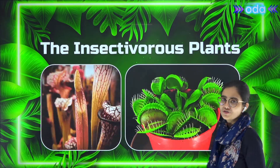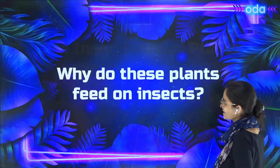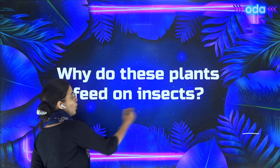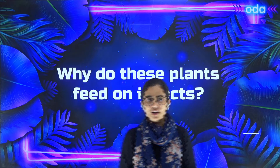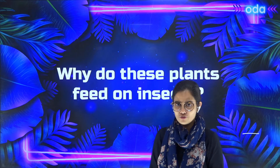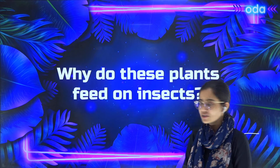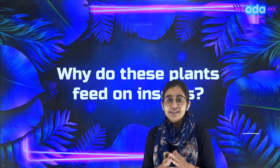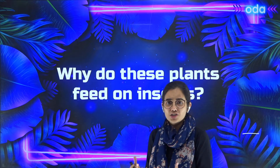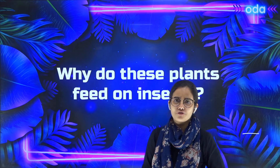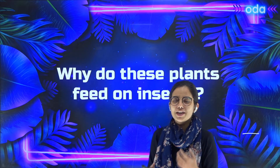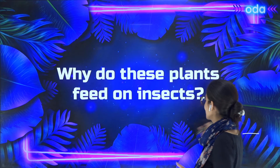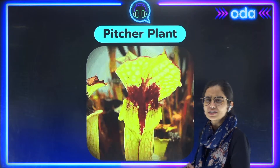Let's have a look at the examples — being the pitcher plant and the Venus flytrap. But the question is, why do these plants feed on insects? Because we know that plants make their own food by the process of photosynthesis. Then why at all is there a group of plants feeding on insects? Well, the answer is very simple: these insectivorous plants grow on soil which does not have the right amount of nutrients. So to fulfill all their nutrient requirements, they have to feed on insects. Now let's have a look at the first example, which is the pitcher plant.